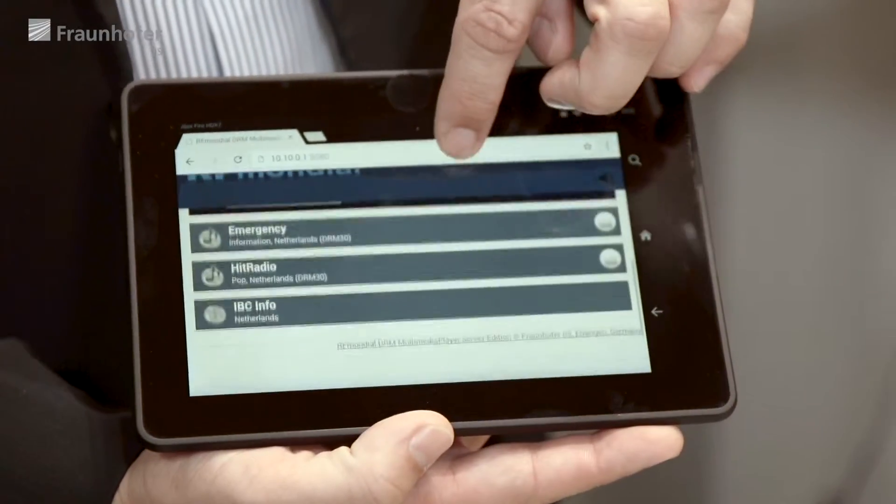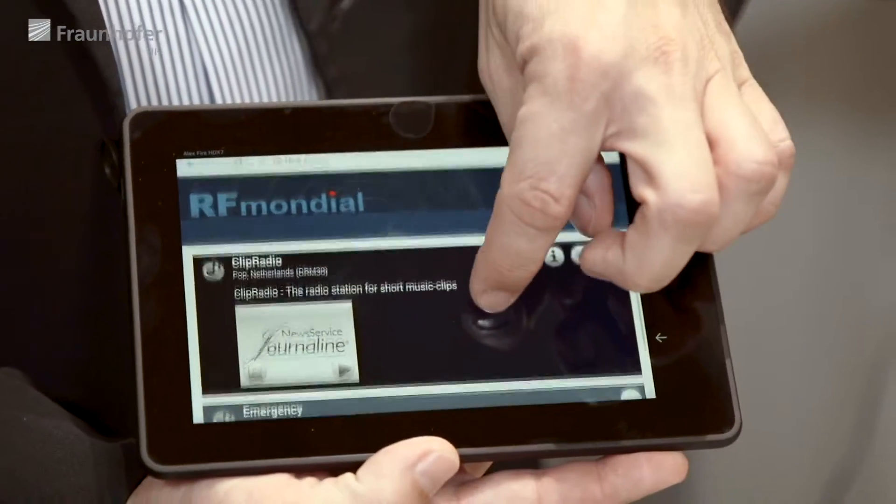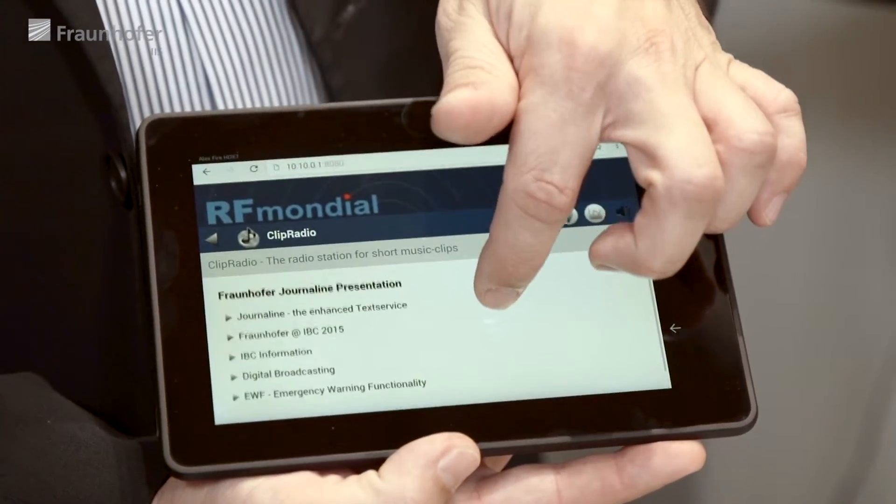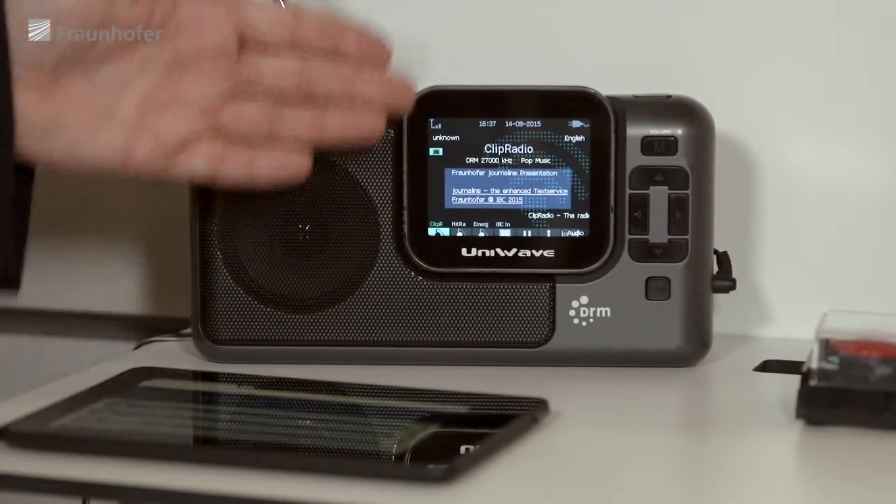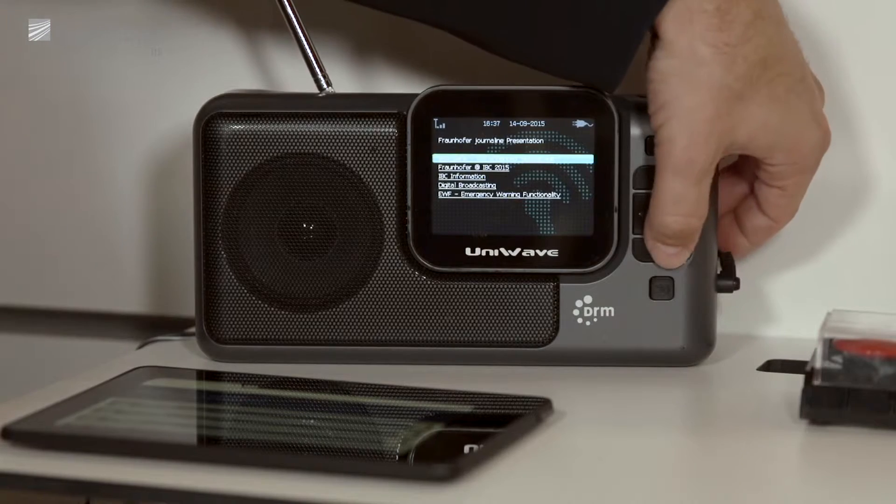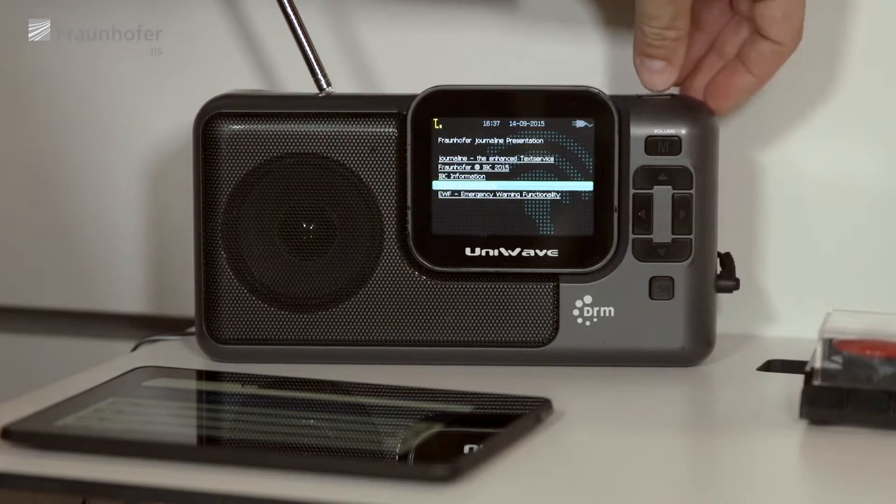We keep the benefits, the large area coverage in AM, in digital, but we enhance it with more content, with no audio distortion, and with elements such as text news that you can look up at any time, a solution called Journaline, which is like an electronic newspaper or teletext service on your radio set.